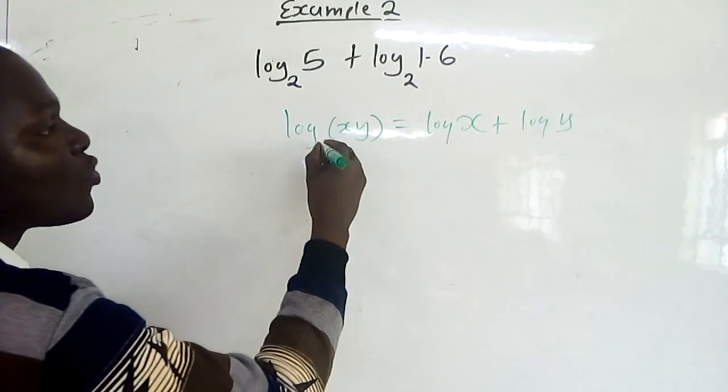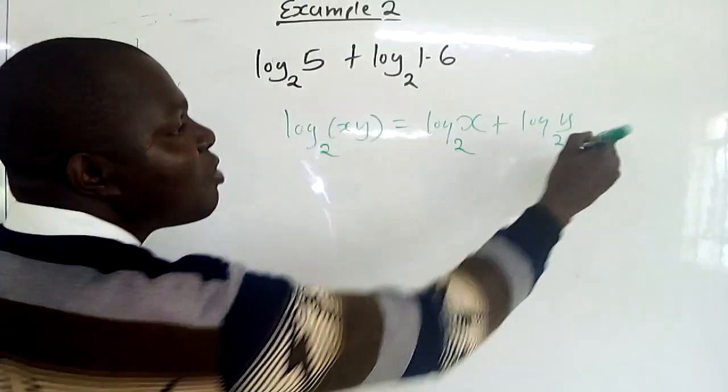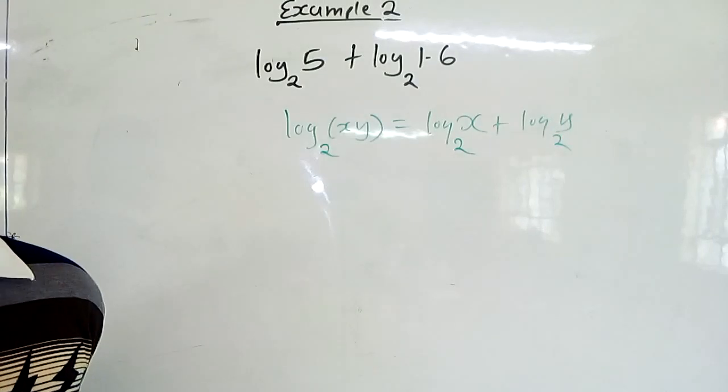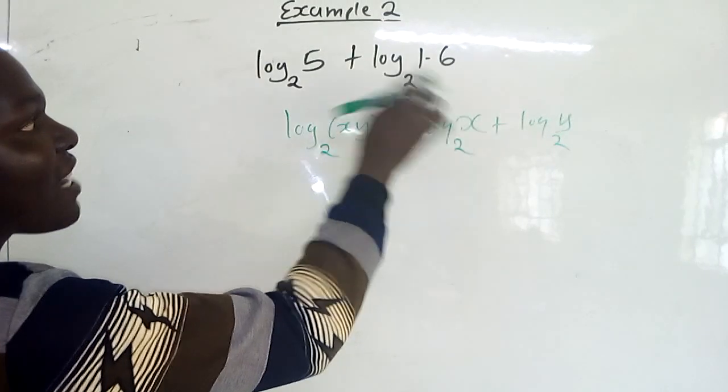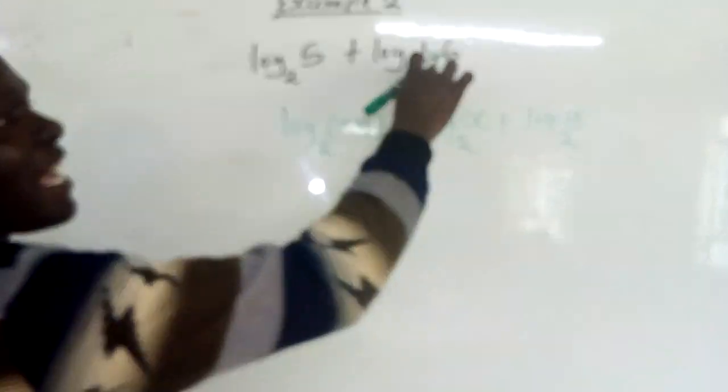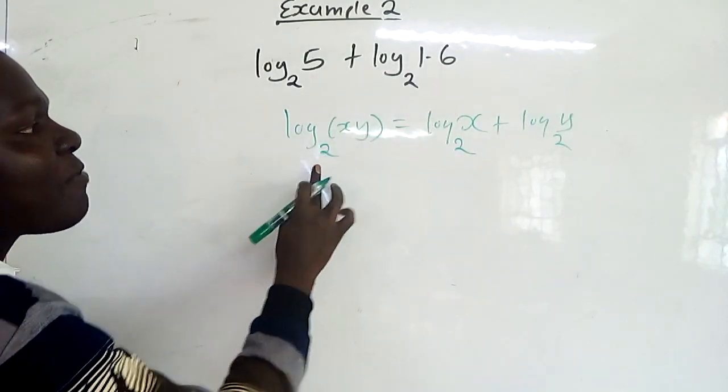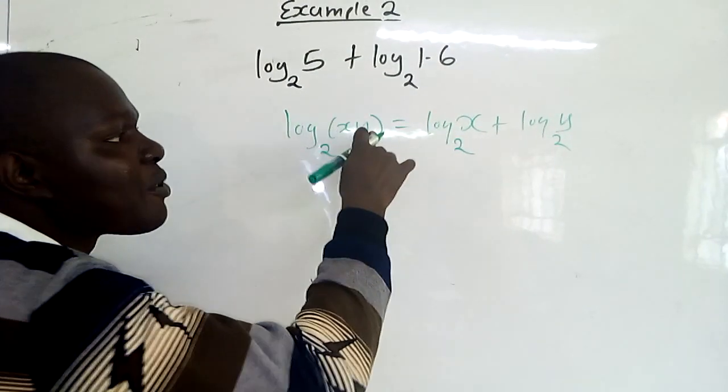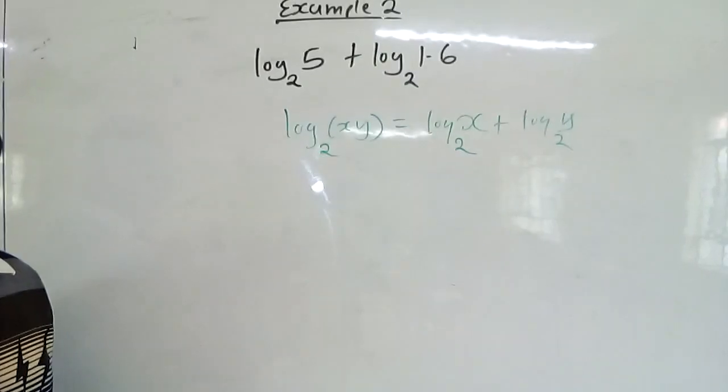You can see the base is the same, 2. So if this is base 2, everything must be base 2. It means our x is 5 and our y is 1.6. So when we are simplifying, it is going to be 5 times 1.6. Are we together?